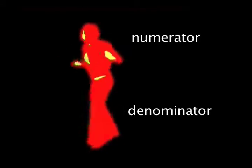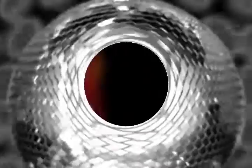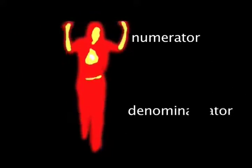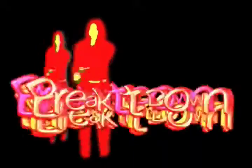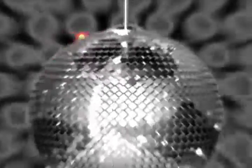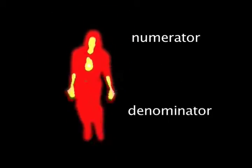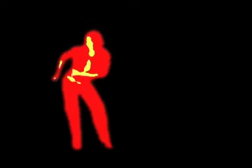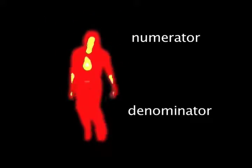Reach high for the numerator, low for the denominator, turn around and take it on down. Break it down, take it down, break it down, take it down, break it down, yeah. Reach high for the numerator, low for the denominator, turn around and break it down.